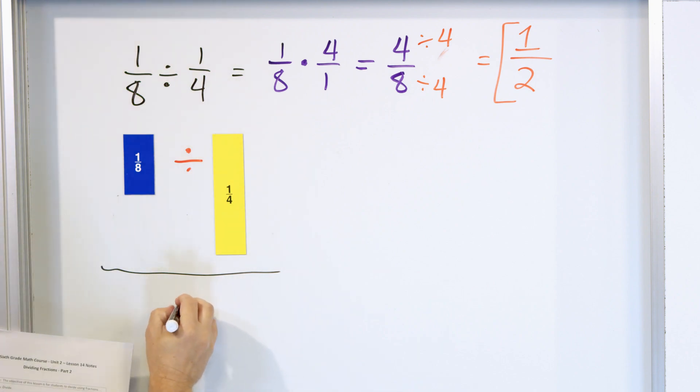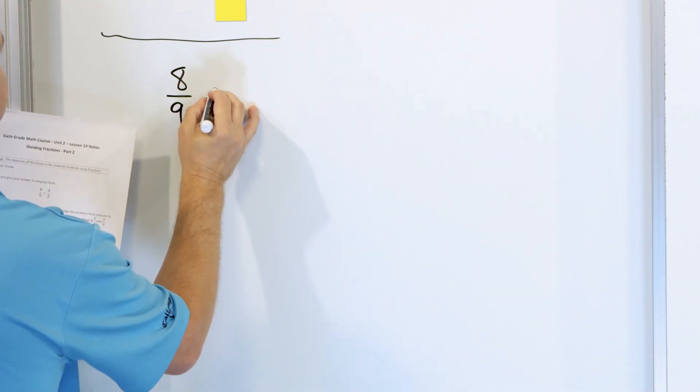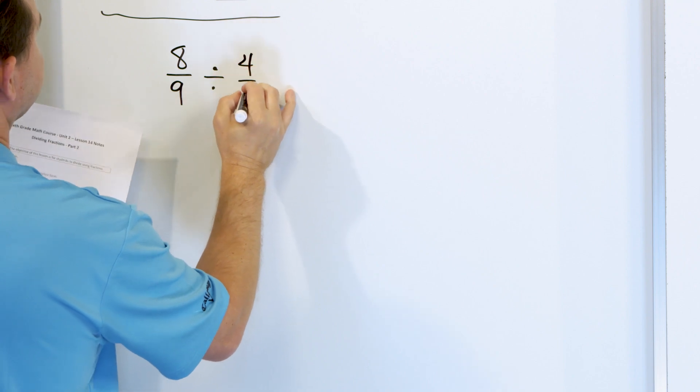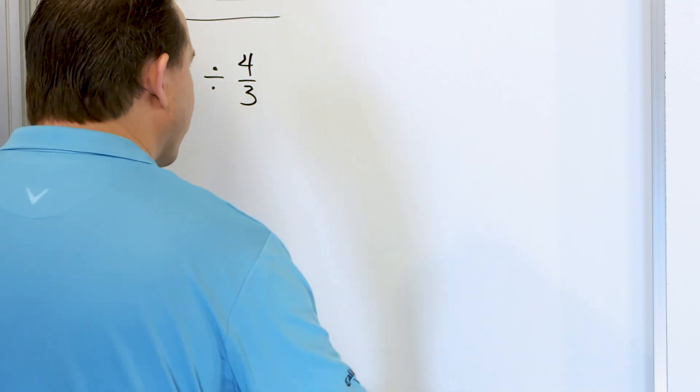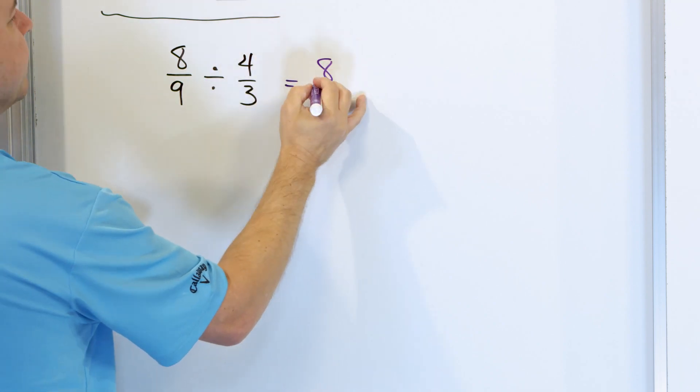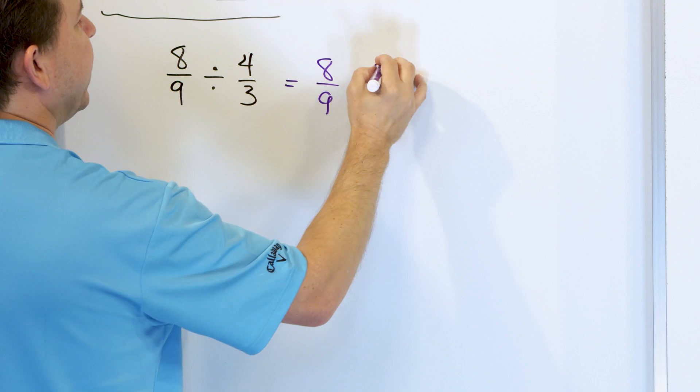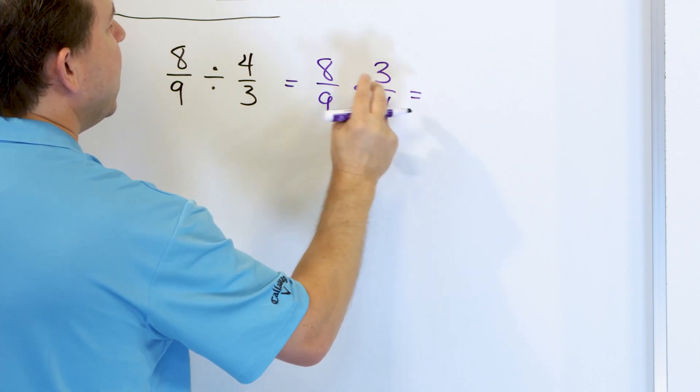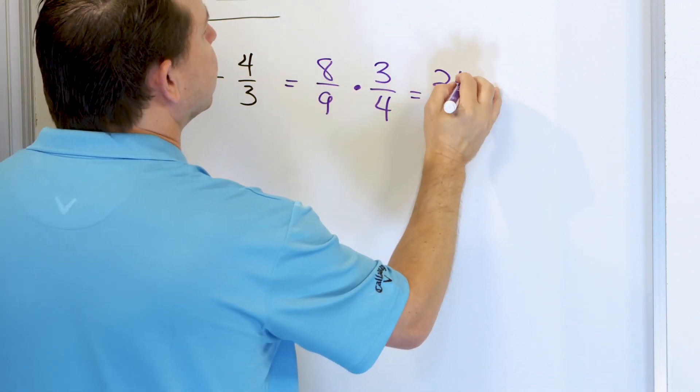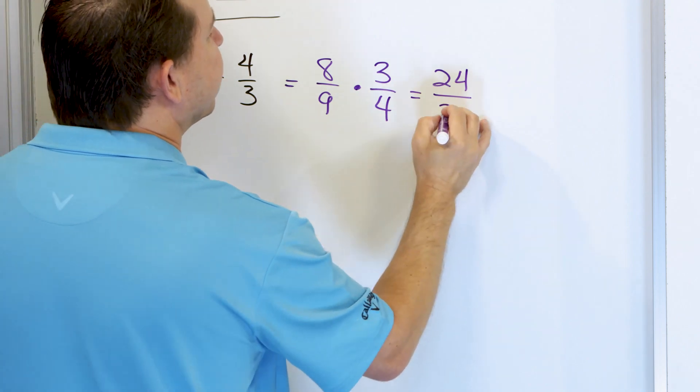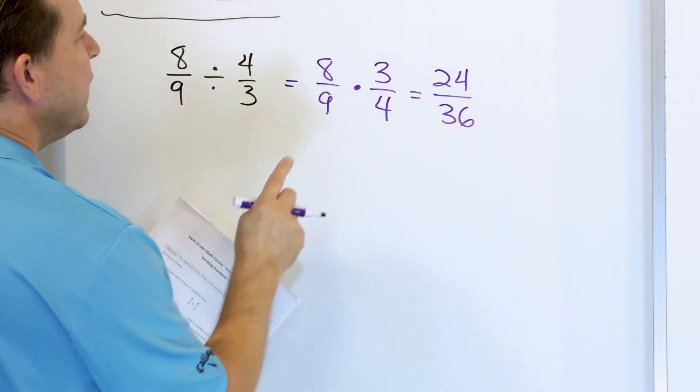Problem number two, let's take a look at 8/9 and we'll divide it by 4/3. No more pictures, just cranking through it. 8/9, change to multiplication and then flip, make this 3/4. 8 times 3 is 24 and 9 times 4 is 36. So 24/36.